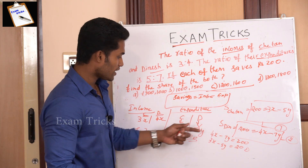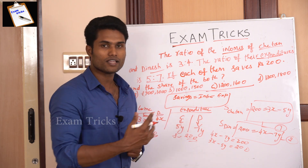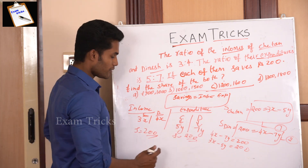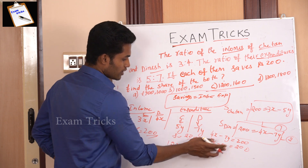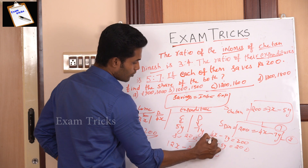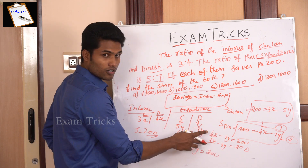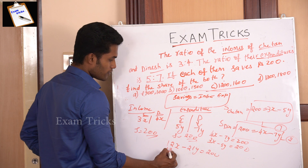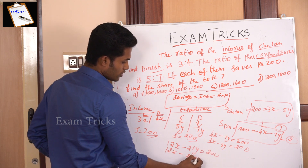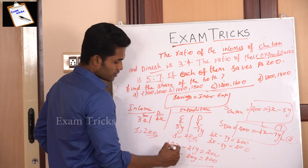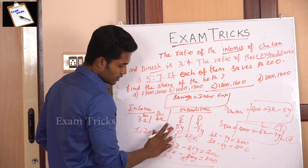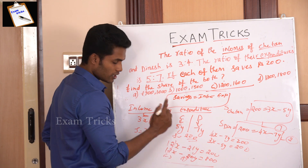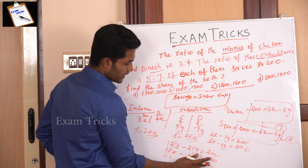To solve, multiply equation one by 4: 12x minus 20y equals 800. Multiply equation two by 3: 12x minus 21y equals 600. Change the sign and subtract: minus 21y plus 20y gives minus y, and 600 minus 800 gives minus 200.